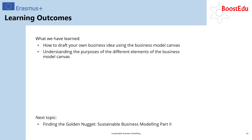To summarize, the business model canvas helps businesses better understand their customer segments, outline their related value proposition, and list the anticipated costs. I hope you now have a better understanding of how to use the business model canvas to draft your own business idea. In part two of finding the golden nugget sustainable business modeling, we will talk about how to include sustainability into your business model and thus pursue a sustainable value creation.